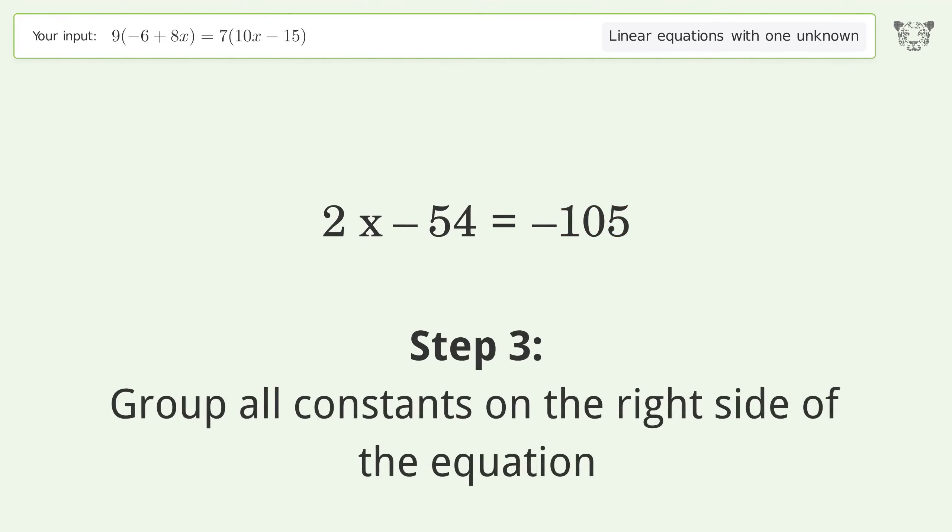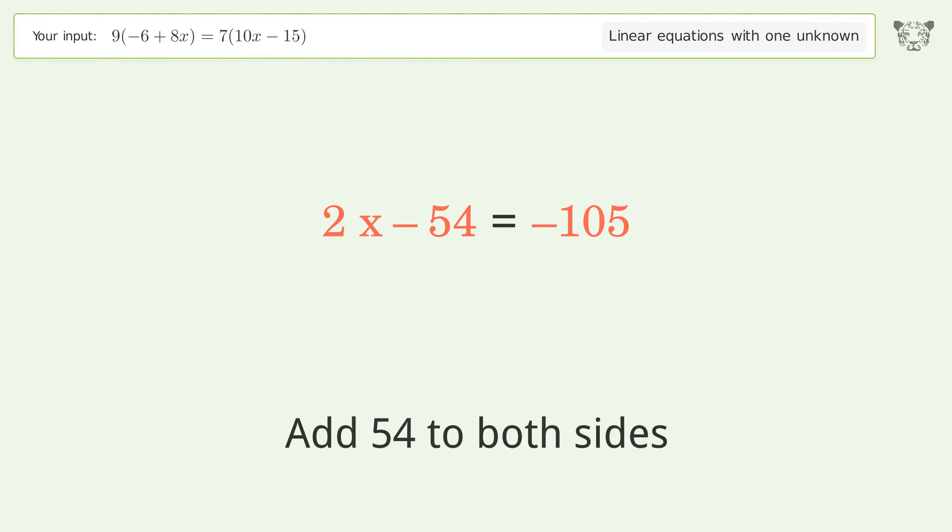Group all constants on the right side of the equation. Add 54 to both sides. Simplify the arithmetic.